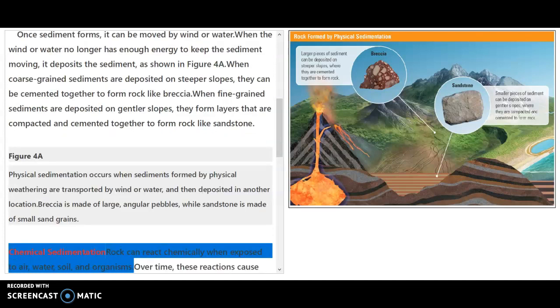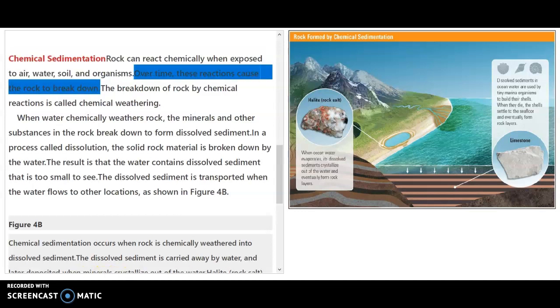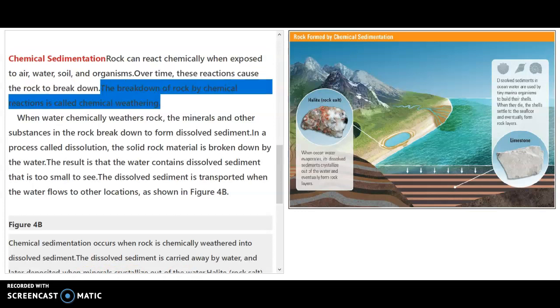Chemical sedimentation. Rock can react chemically when exposed to air, water, soil, and organisms. Over time, these reactions cause the rock to break down. The breakdown of rock by chemical reactions is called chemical weathering.